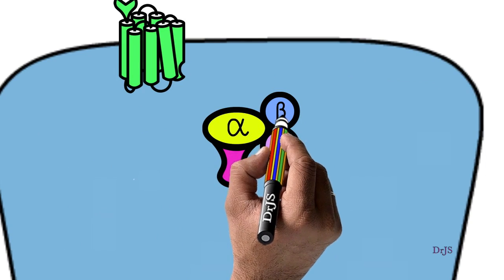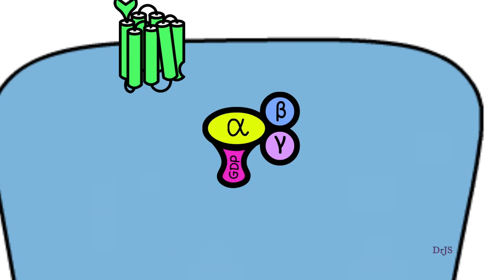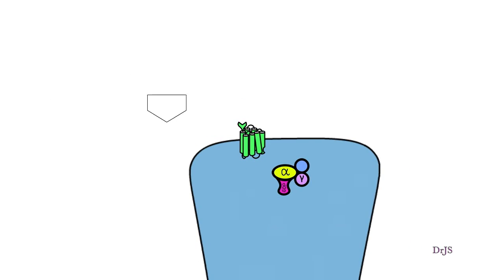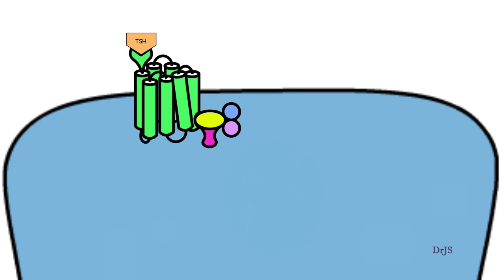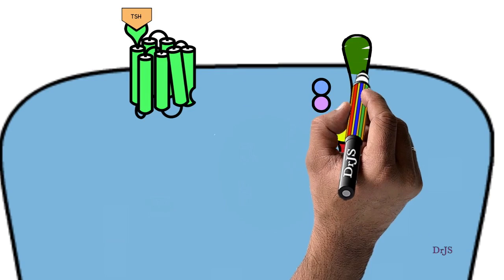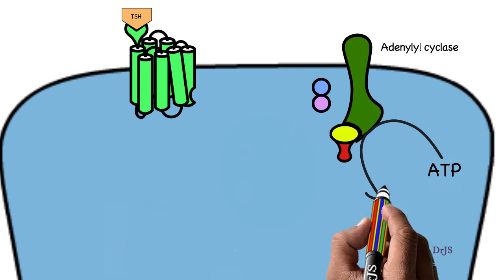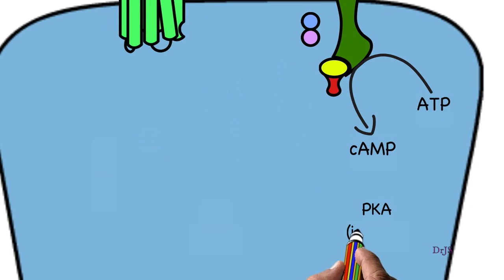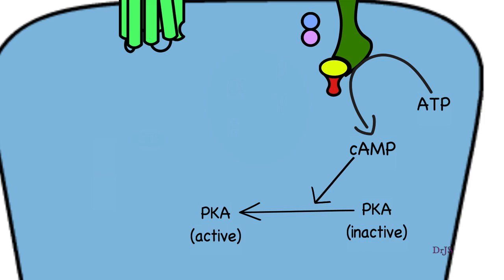A trimeric G-protein attaches to its cytoplasmic part, formed with alpha, beta, and gamma units. When GDP is attached to the alpha unit, it is in an inactive state. As TSH attaches to the receptor, conformational changes occur, and GDP is converted into GTP. The alpha unit then separates from the complex and fuses with the cytoplasmic adenylyl cyclase enzyme. This enzyme converts cytoplasmic ATP into cyclic AMP, which activates inactive protein kinase A into active protein kinase A.